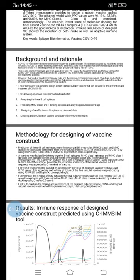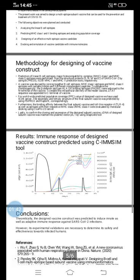A vaccine was then developed by combining B-cell epitopes, MHC class I and MHC class II epitopes using suitable linkers and different immunogenic peptides. For population coverage analysis, we used IEDB servers. Secondary and tertiary structures of the final subunit vaccine protein were predicted by PSIPRED. Finally, the expression of the designed subunit vaccine was confirmed, and the cDNA of the designed subunit vaccine was inserted into a plasmid vector using the SnapGene tool.